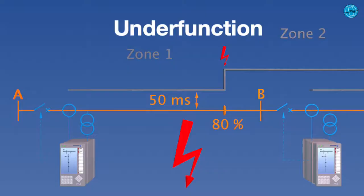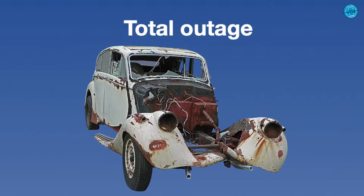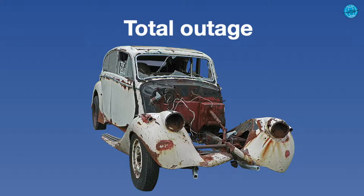Under function would be, for instance, too late distance protection tripping in the wrong zone. Over function are unwanted trips, for instance, a differential protection trip under correct operating conditions or when a transformer is switched on. And finally, total outage is total outage. The protection system kind of hibernates.